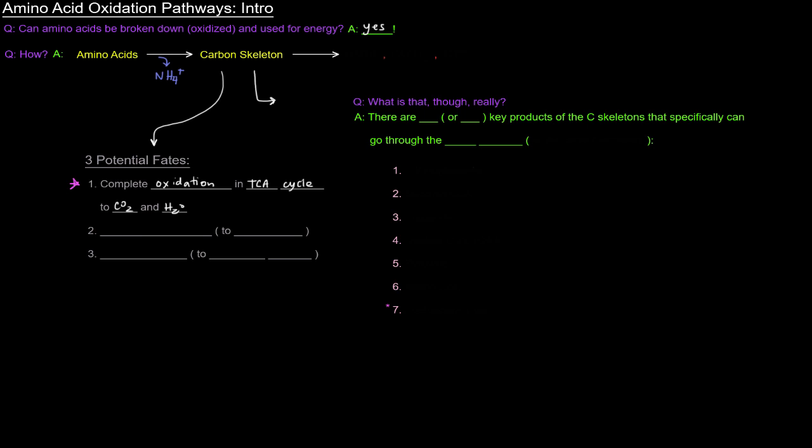But that carbon skeleton can also be used in gluconeogenesis to give glucose. And a third potential fate is ketogenesis to give ketone bodies. We're not going to really talk about two and three very much. We're really going to talk about number one, because we want to answer this question of amino acids being broken down or oxidized and used for energy.